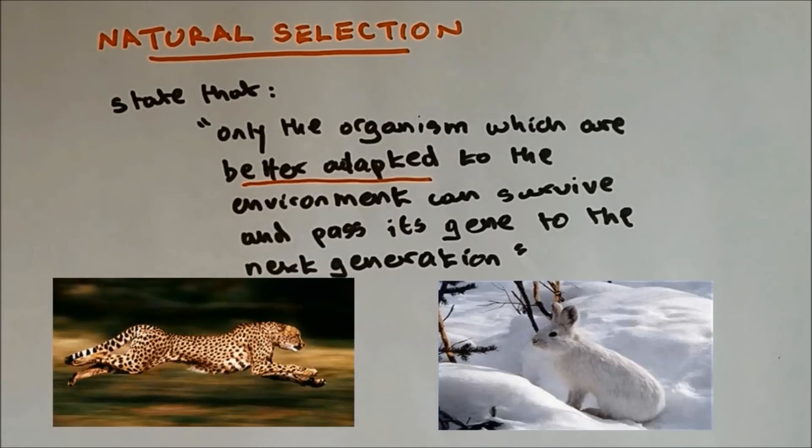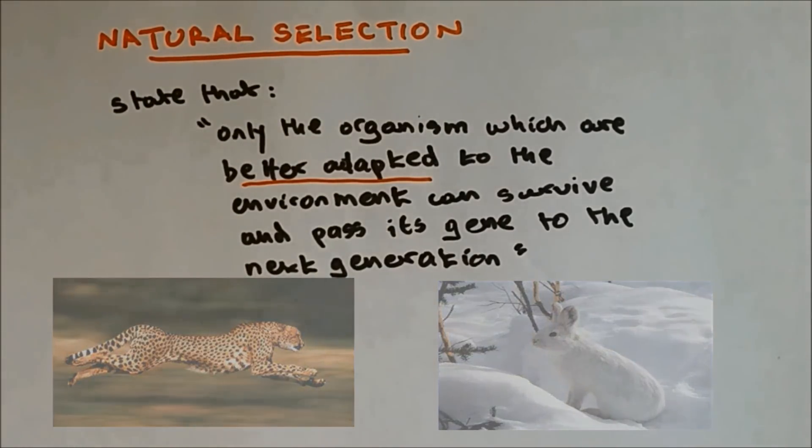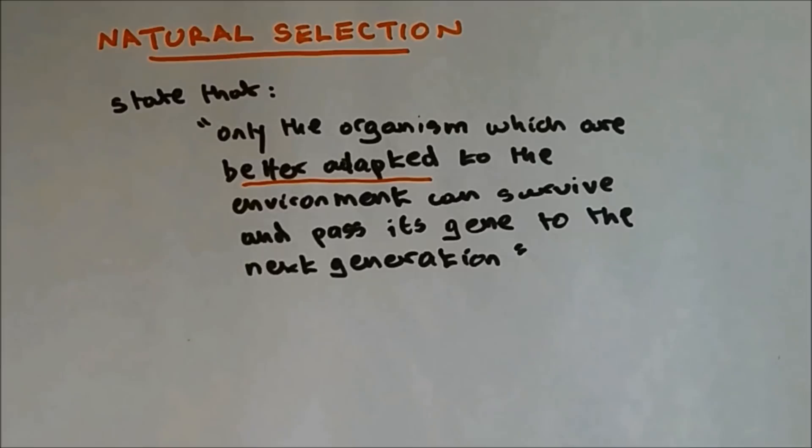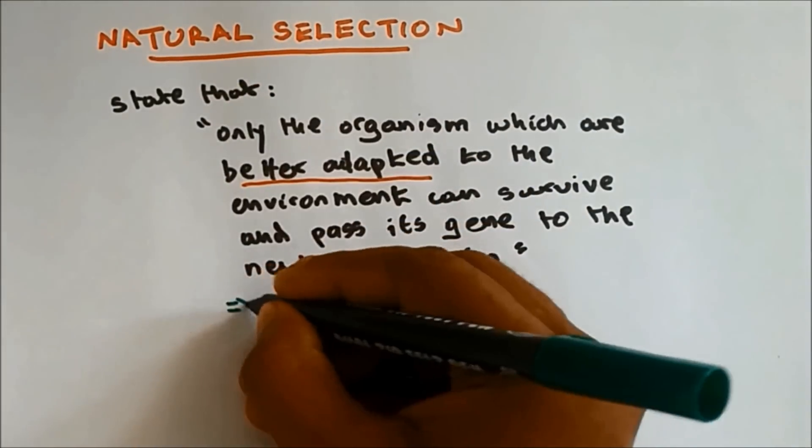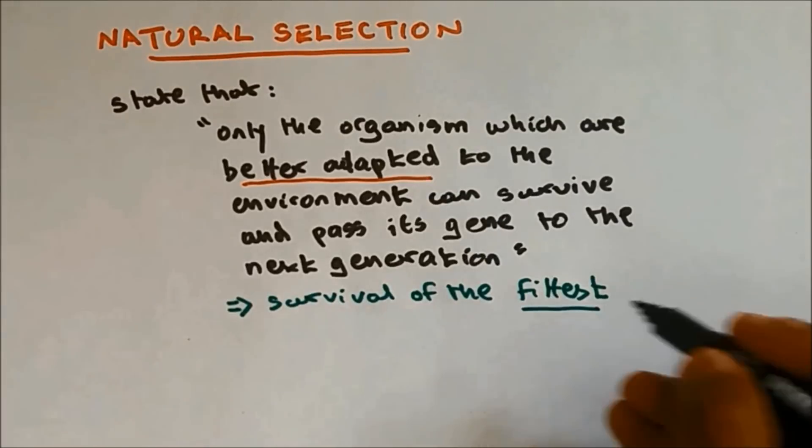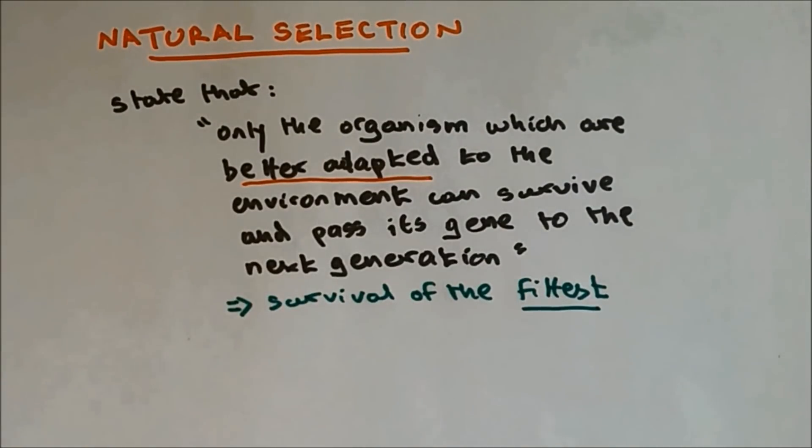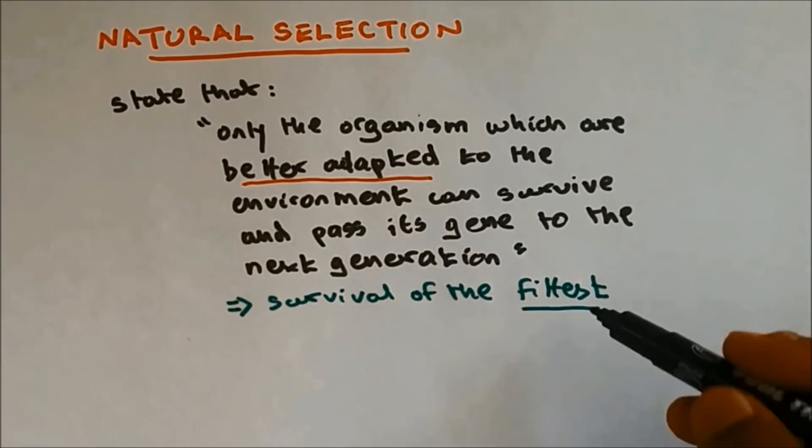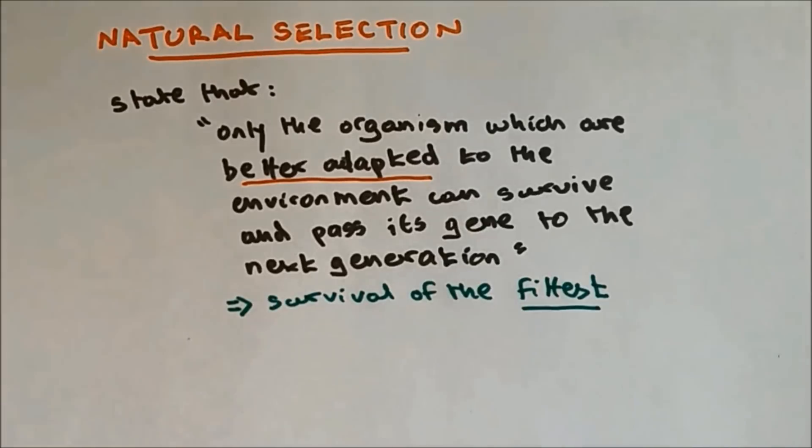If they reproduce, their genes will be passed on to the next generation. So such species will persist and will not be extinct. A different name for natural selection is survival of the fittest. The word fittest means better adapted. So only the organism which are better adapted will be able to survive.